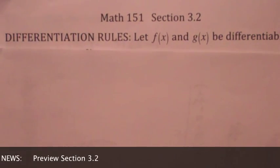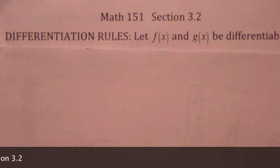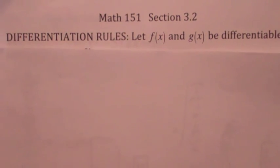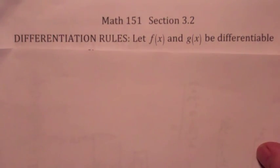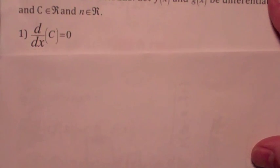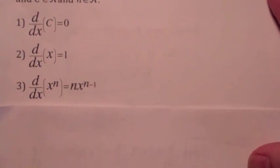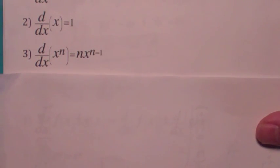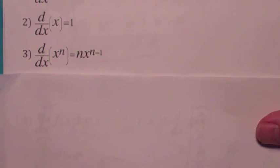Welcome back. In section 3.2, we're going to continue our discussion on differentiation rules and talk about two useful rules: the product rule and the quotient rule. In 3.1, the most useful rule we looked at was the power rule. Remember, the power rule can be used for radicals if you change the radicals to rational exponents first. n can be any real number.